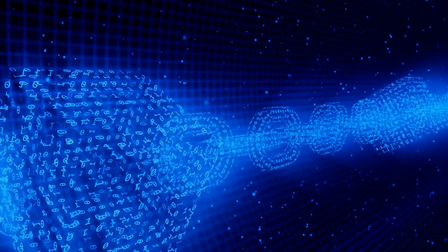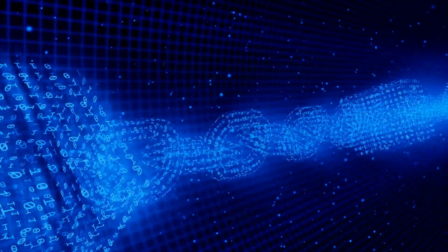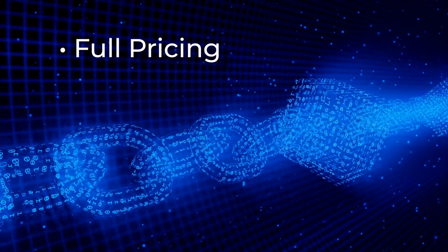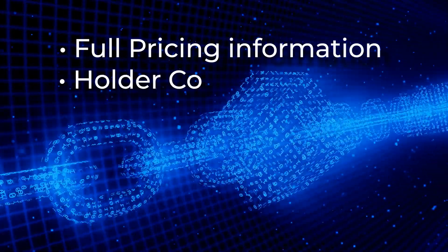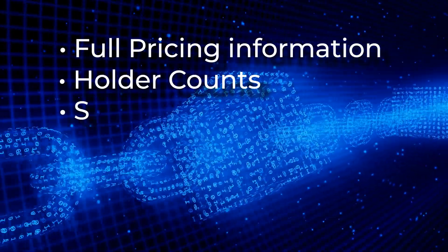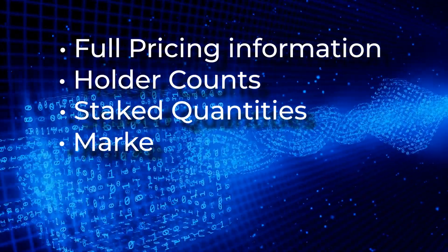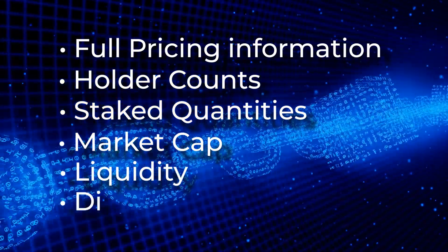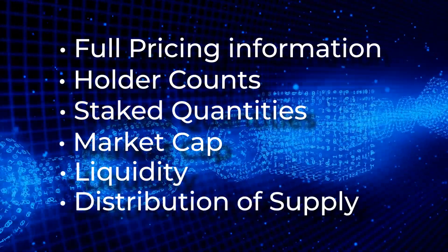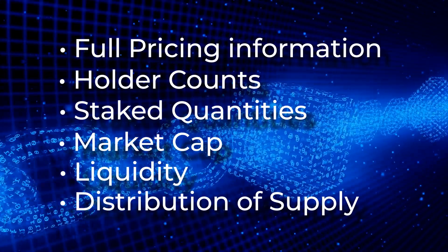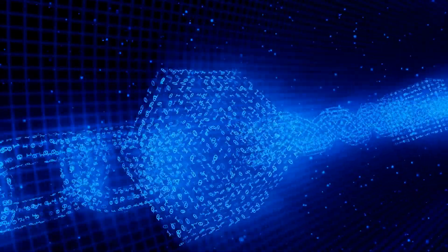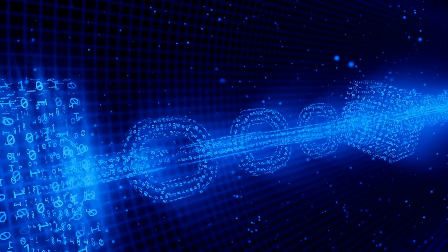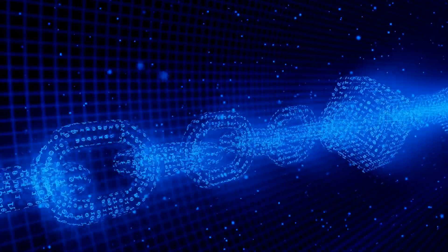The blockchain contract in concert with Chainlink price feeds provides everything we need, such as full pricing information, hold accounts, staked quantities, market cap, liquidity including strategic reserves, and distribution of supply amounts across our five blockchains. In addition, the Morales speedy nodes allow us to sample all the data at any point in our history.